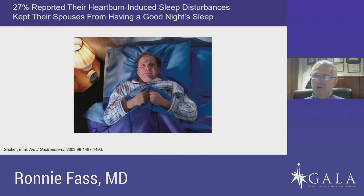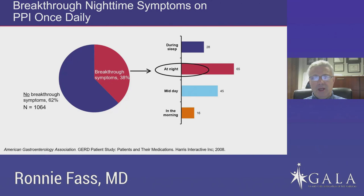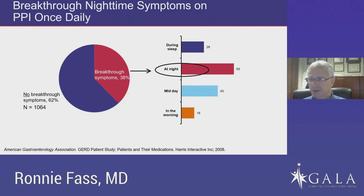An important survey conducted by the American Gastrological Association looked at more than 1,000 GERD patients and wanted to see how many still had breakthrough symptoms despite taking PPI once a day. They found it was more than a third of these patients. When asked when they had those breakthrough symptoms, 65 percent said at night and 28 percent said during sleep — suggesting nighttime and sleep time were associated with a higher rate of breakthrough symptoms in patients already taking anti-reflux medications.